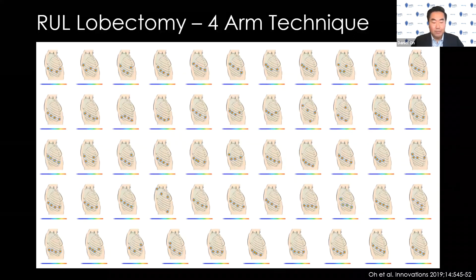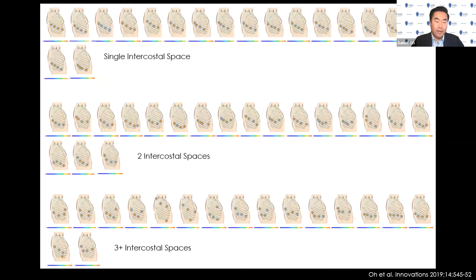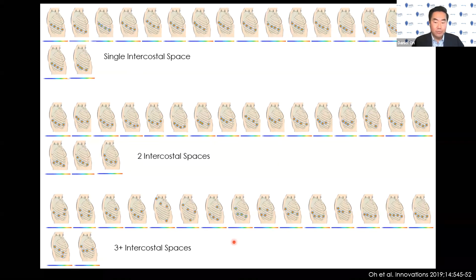We organized responses by the number of intercostal spaces in which ports were placed. Theoretically, when robotic lobectomy was first started, people wondered whether there would be less pain if all ports were kept in the same intercostal space. But what we found is that single intercostal space was just as commonly used as two intercostal spaces, and that was just as commonly used as three. It's probably unlikely that where you put the ports is contributing a lot to pain, otherwise surgeons would have converged on a single intercostal space.